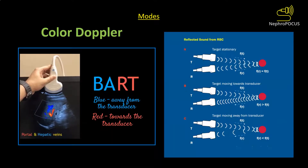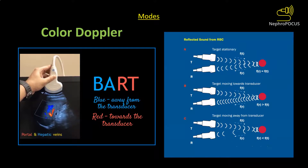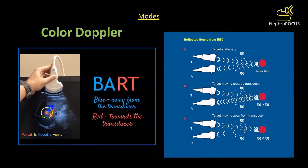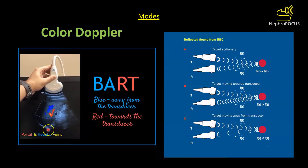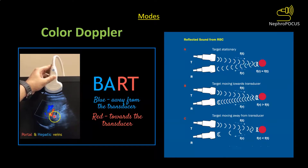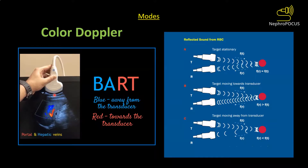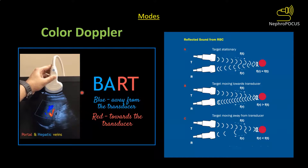The next mode is color Doppler, which detects blood flow and indicates its direction. In a liver image, a blue vessel represents a hepatic vein carrying blood away from the liver and away from the transducer toward the inferior vena cava. The red vessel is a portal vein carrying blood from the intestines into the liver, toward the transducer. You can remember this with the mnemonic BART: Blue Away, Red Towards the probe.